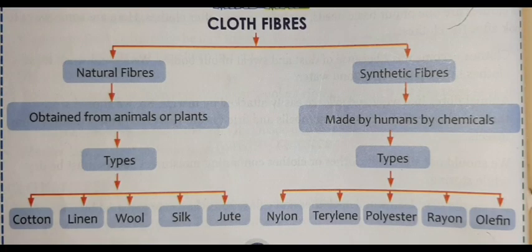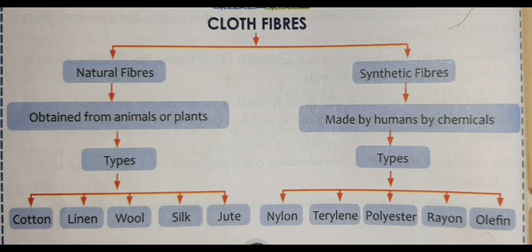So students, you must be wondering how these clothes are formed. These clothes are formed from cloth fibers. Now what are fibers? Fibers are the long and thin threads — in simple language we call them dhaga. And from these fibers we make beautiful patterns of clothes by the process of weaving and knitting.